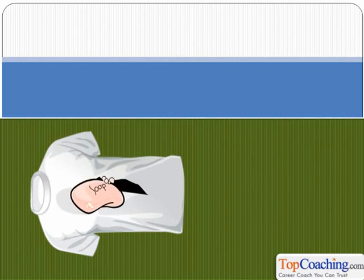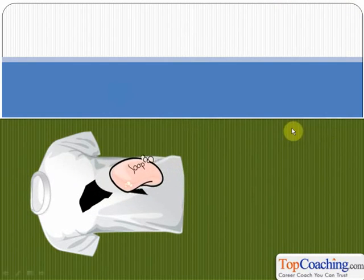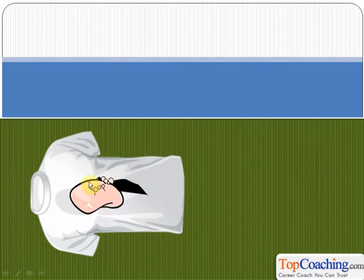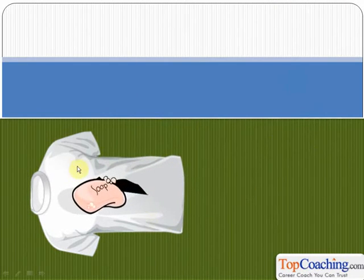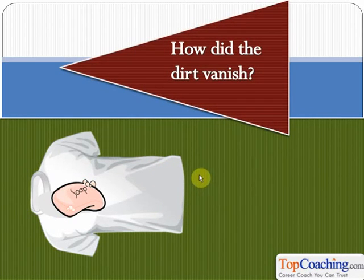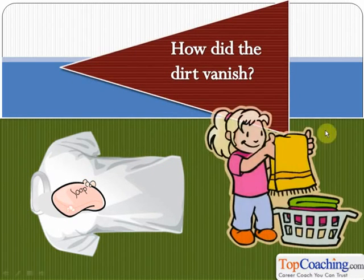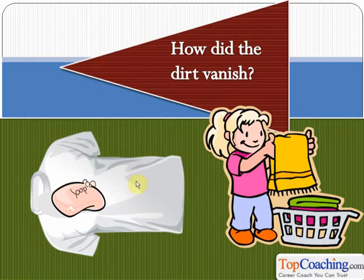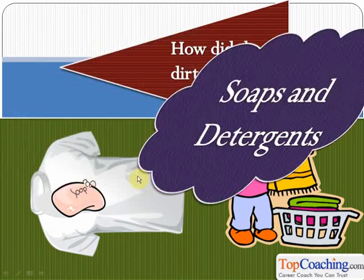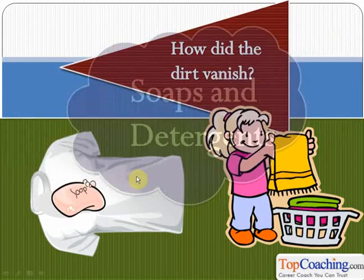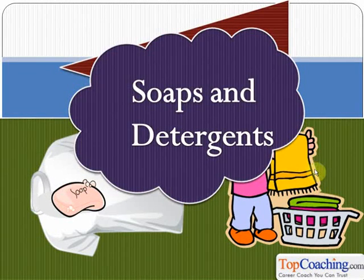Take a look at this black spot on this white t-shirt. Once we wash this t-shirt with the soap, the spot vanishes. So how did the dirt vanish? How do soaps and detergents work? That's what we are going to learn in this chapter — soaps and detergents.